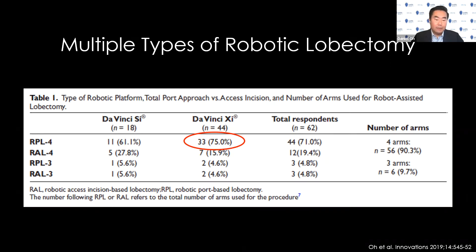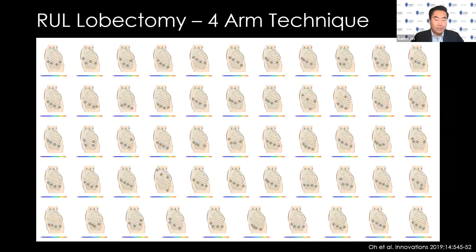When we looked at the survey responses for a four-arm technique of a right upper lobe, what we saw was that generally speaking, not many responses were very similar, although there are some potential themes you could identify.